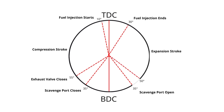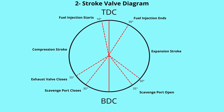The expansion stroke starts from TDC until the exhaust valve opens at 50 degrees before BDC. The exhaust and scavenge openings overlap, and the cycle repeats.